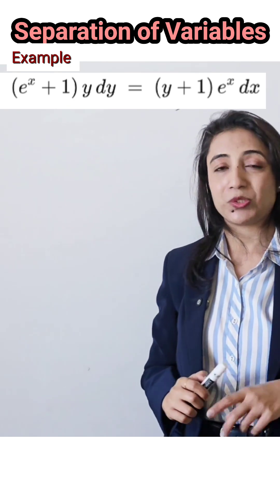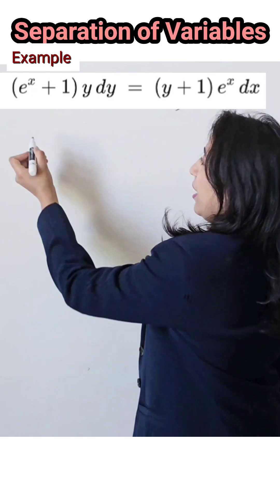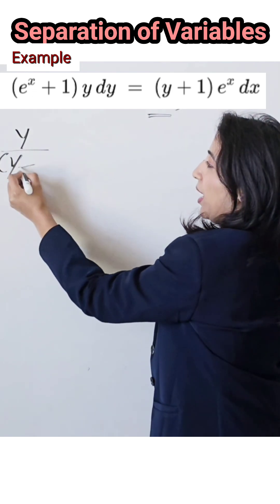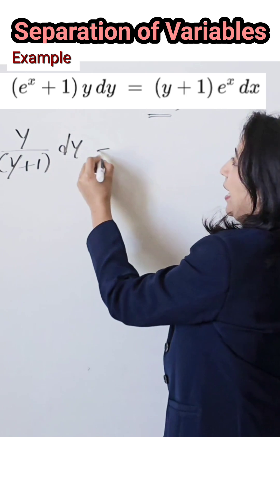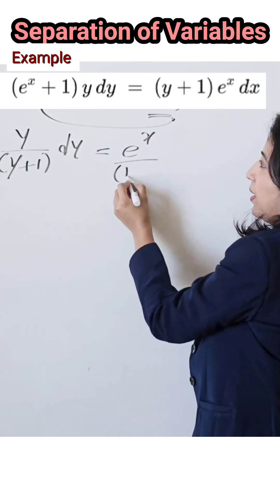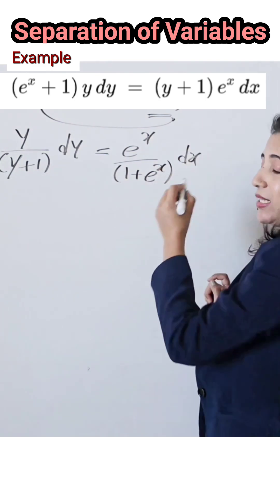So separate the variables. I will write this y term shifted to the left side: y divided by (y+1) dy. And the x term shifted to the right hand side: e^x divided by (1 + e^x) dx. Now see, the variables are separated, so just integrate both sides.